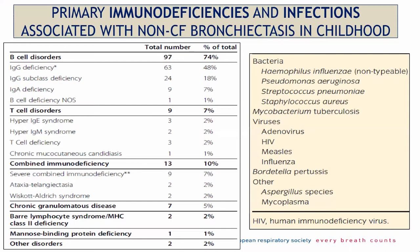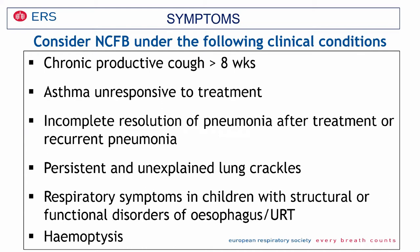When should you suspect a child to have bronchiectasis? First of all, when you have a child with chronic productive cough lasting more than eight weeks. If you have a child with asthma not responding to treatment — remember asthma is the easiest diagnosis but you should always be careful about the differential diagnosis. You should suspect bronchiectasis when you have incomplete resolution of pneumonia after treatment or recurrent pneumonia. When you have persistent and unexplained lung crackles, or a child with respiratory symptoms and structural or functional disorders of the esophagus or upper respiratory tract, or when you have a child with episodes of hemoptysis.